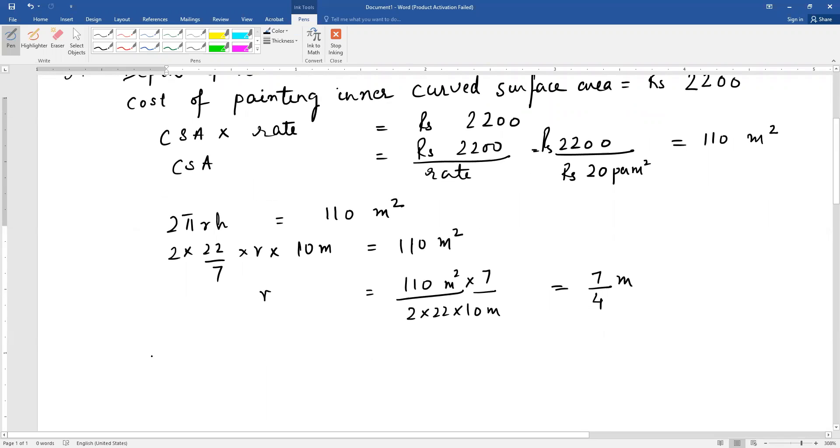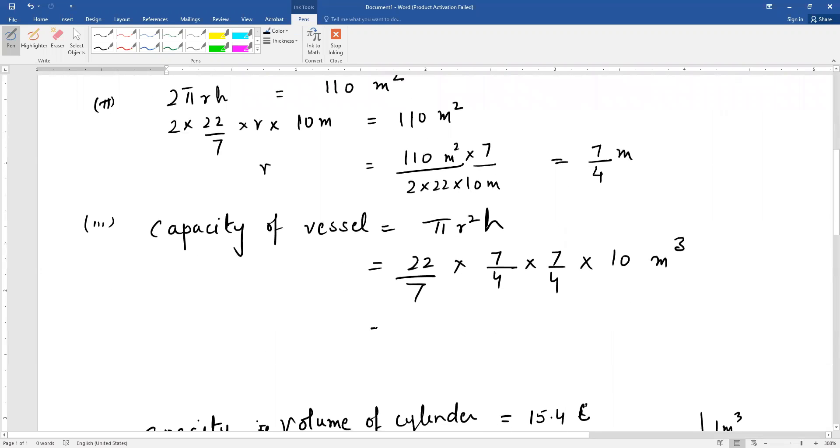This is the second part. The third part is the capacity of the vessel. Capacity means volume. Because this is a cylinder, volume equals πr²h: 22/7 × 7/4 × 7/4 × 10. Everything is in meters, so the answer will be in cubic meters. I hope you can calculate this answer.